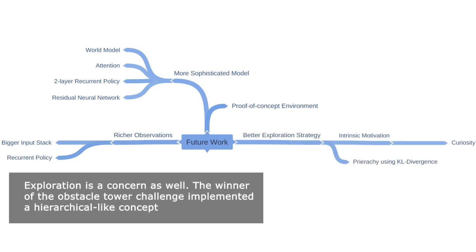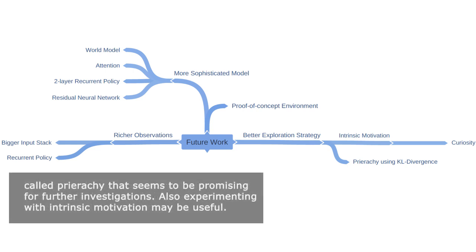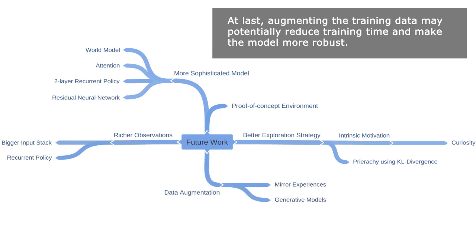Exploration is a concern as well. The winner of the Obstacle Tower challenge implemented a hierarchical concept called hierarchy, which seems promising for further investigations. Also, experimenting with intrinsic motivation may be useful. Finally, augmenting the training data may potentially reduce training time and make the model more robust.